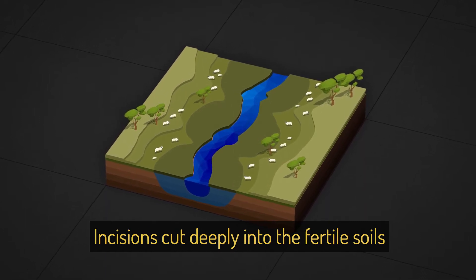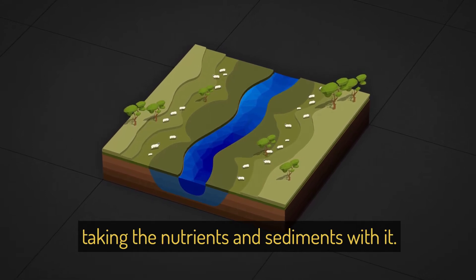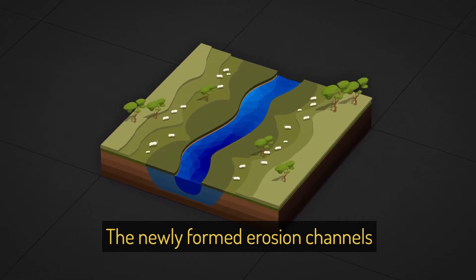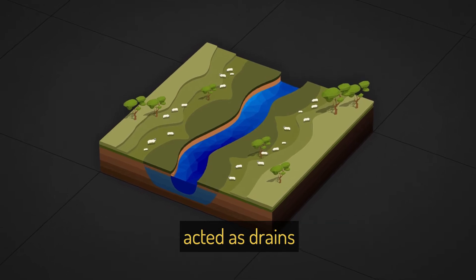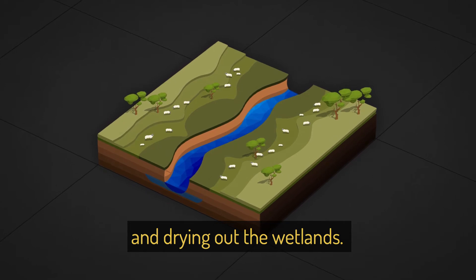Incisions cut deeply into the fertile soils, taking the nutrients and sediments with it. The newly formed erosion channels acted as drains, dropping the water table to the channel floor and drying out the wetlands.